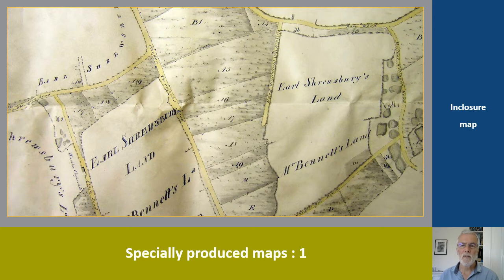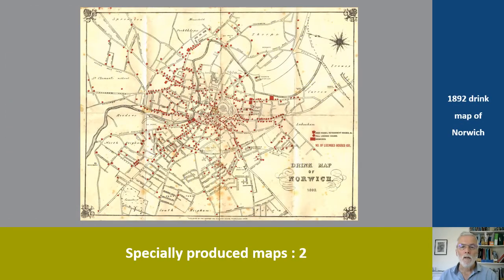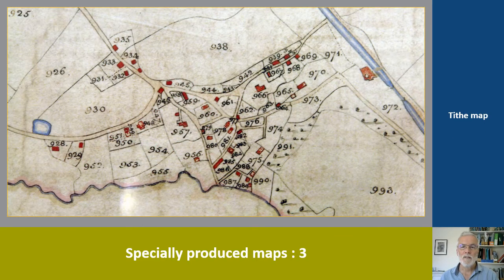Ordnance Survey maps are not the only maps that may be of use to historians. Some maps were produced specially for particular purposes. This is an example of a map prepared in connection with the enclosure of common land. This one is quite different — prepared in 1892 as part of a temperance campaign. Norwich was reckoned to have a church for every week of the year and a pub for every day. Later I'll talk about preparing a 2020 version of the drink map for part of Norwich. This one is a map prepared under the Tithe Commutation Act of 1836. These maps predate detailed Ordnance Survey maps, and so can provide useful information about an area in addition to the purpose for which they were prepared.